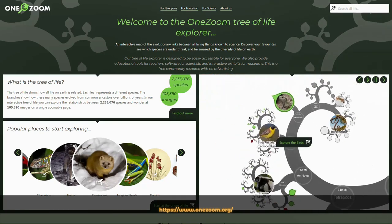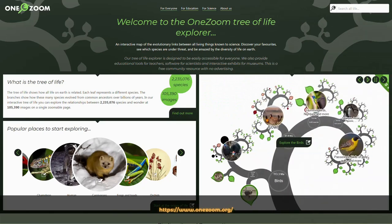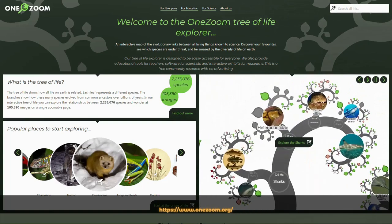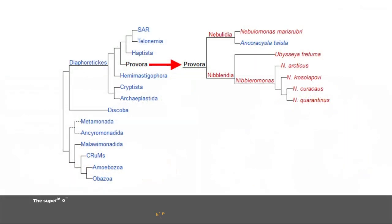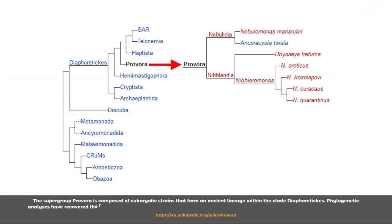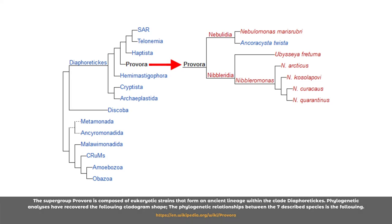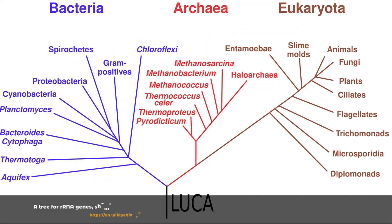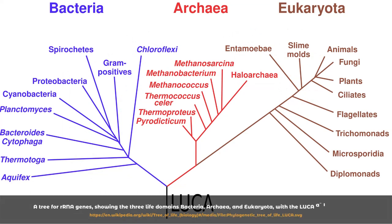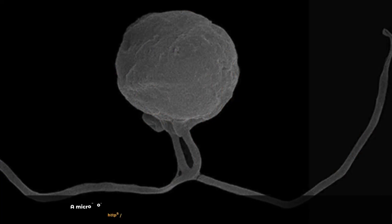Provora is a proposed supergroup of eukaryotes made up of predatory microbes. The supergroup is further divided into two clades: the nibblerids, which use tooth-like structures to nibble chunks of their prey, and the nebulids, which engulf their prey whole. This supergroup has created a new ancient branch on the tree of life. Members of the Provora supergroup are tiny organisms — predatory microbes — that the scientists describe as the lions of the microbial world, because they prey upon other microbes and within their ecosystem they're relatively rare.